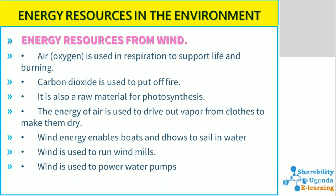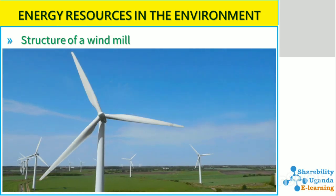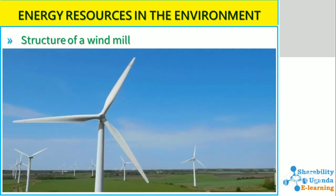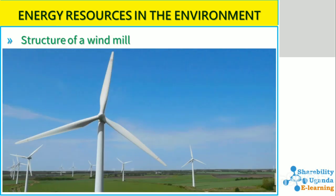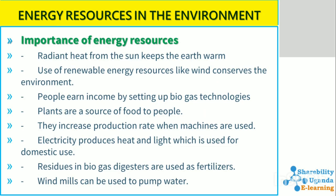Energy resources from wind: air is used in respiration to support life and burning. Carbon dioxide is used to put out fire and is also a raw material for photosynthesis. Wind energy is used to drive vapor from clothes to dry them, to enable boats to sail on water, to run windmills, and to power water pumps. A windmill continuously rotates its blades to produce electrical energy.